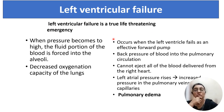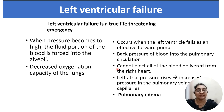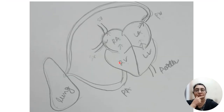Left ventricular failure is a true life-threatening emergency. When pressure becomes too high, the fluid portion of the blood is forced into the alveoli, decreasing oxygenation capacity of the lung. When the left ventricle fails as an effective forward pump, back pressure of blood into the pulmonary circulation occurs — it cannot eject all the blood delivered from the right heart. Left atrial pressure rises, increasing pressure in pulmonary veins and capillaries, and pulmonary edema can occur. Whenever the left ventricle is not able to pump out blood, back pressure occurs in the left atrium and pulmonary vein.